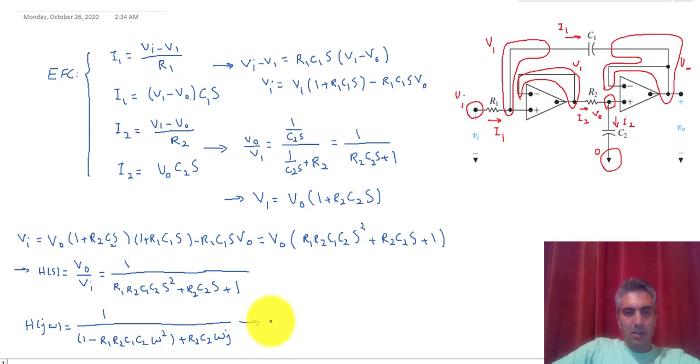And now from this I can calculate the magnitude of H(jω) as 1 over square root of the real part to the power of 2, which is 1 minus R1R2C1C2 ω to the power of 2, the whole thing to the power of 2, plus the imaginary to the power of 2, which is R2C2 to the power of 2, ω to the power of 2.